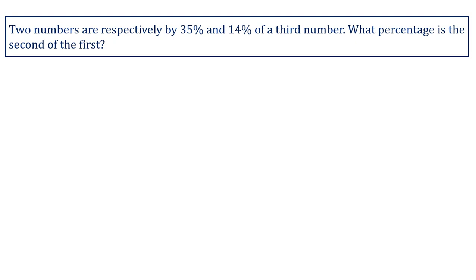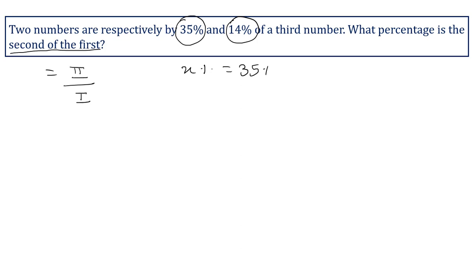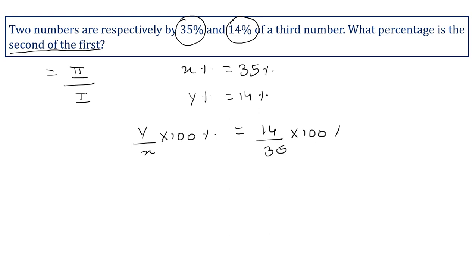Two numbers are respectively 35 percent and 14 percent of a third number. What percentage is the second of the first? The second is compared with the first, so in the numerator put the value of second and in the denominator put the value of first. x percent equals 35 percent and y percent equals 14 percent. Using the formula y upon x into 100 percent: 14 upon 35 into 100 percent gives 40 percent. So 40 percent is the second of the first.